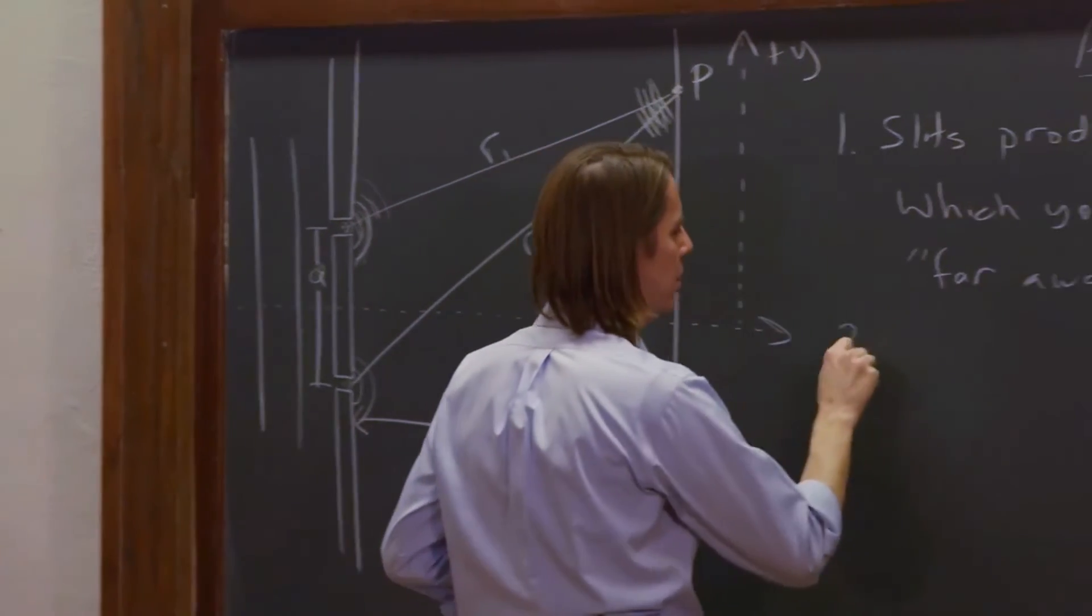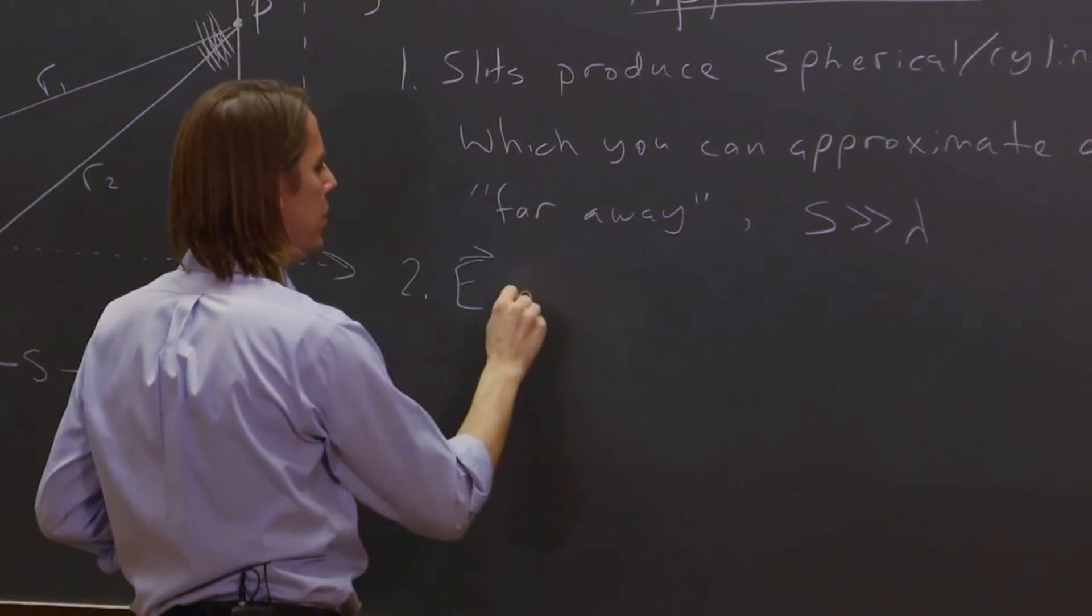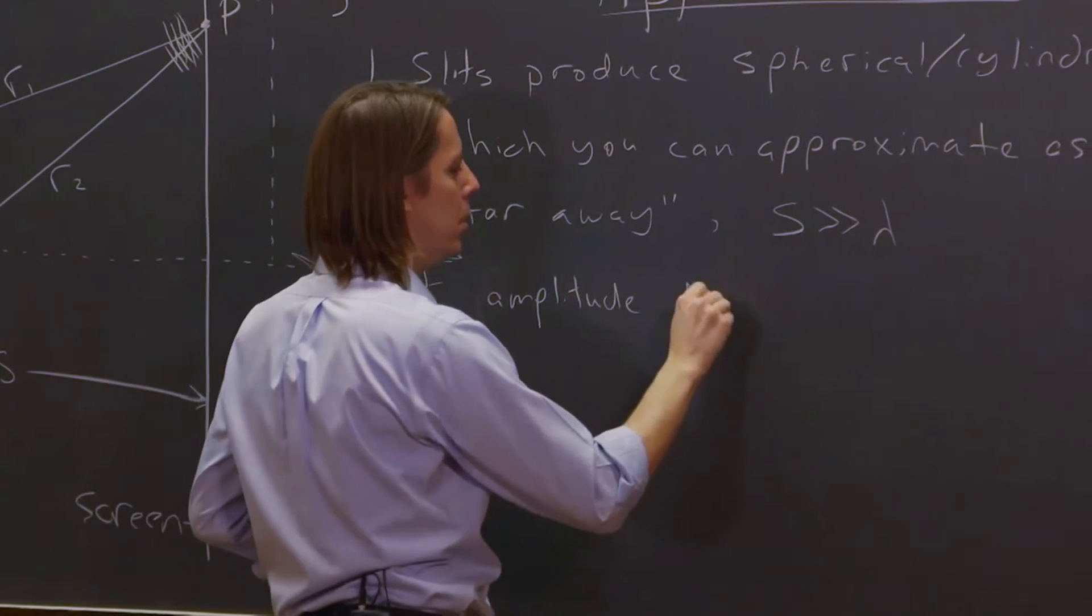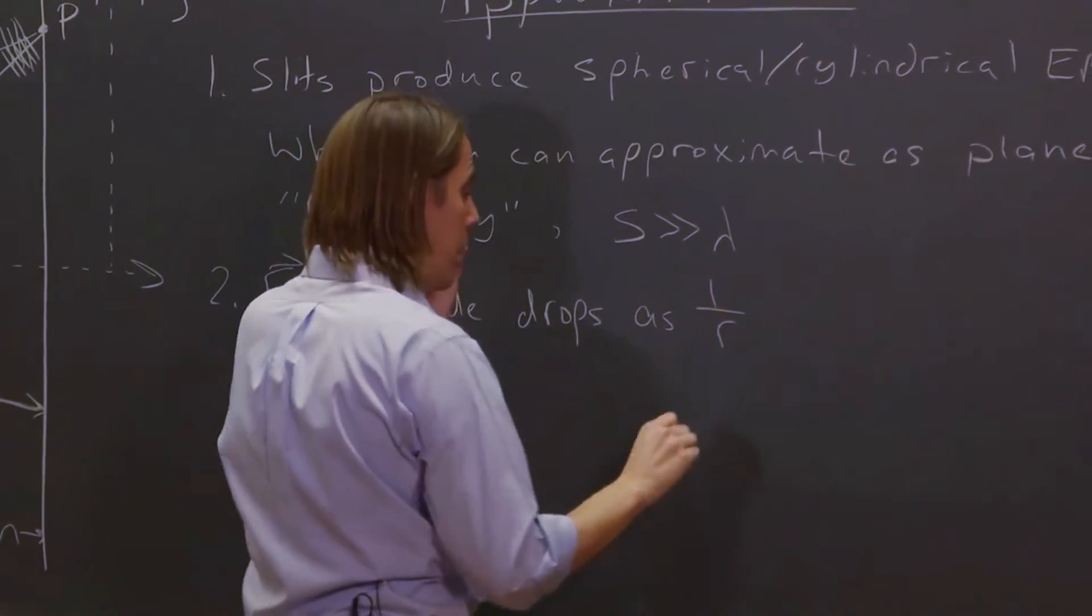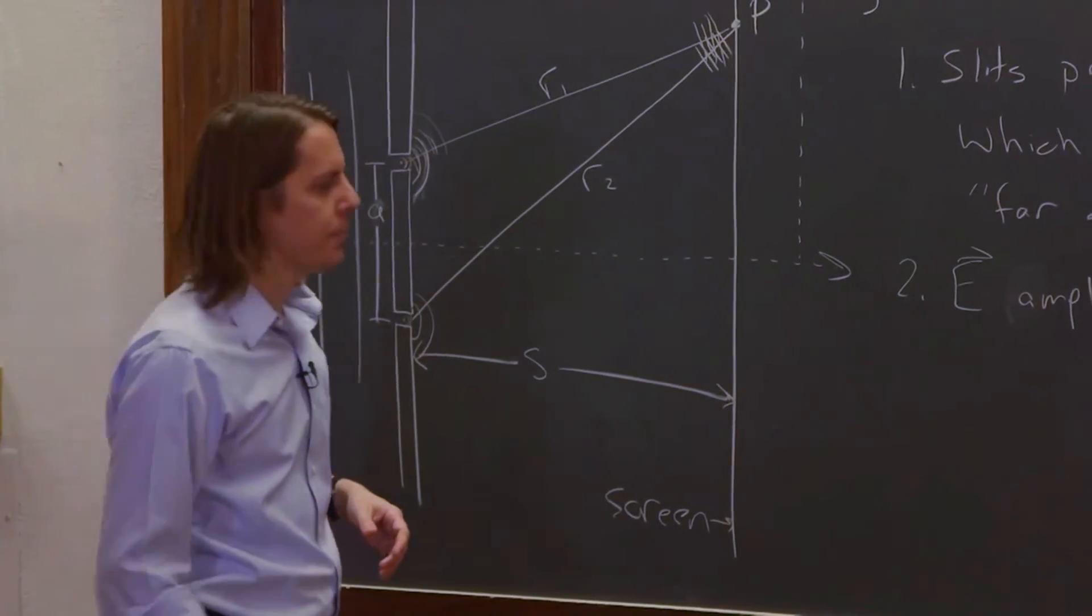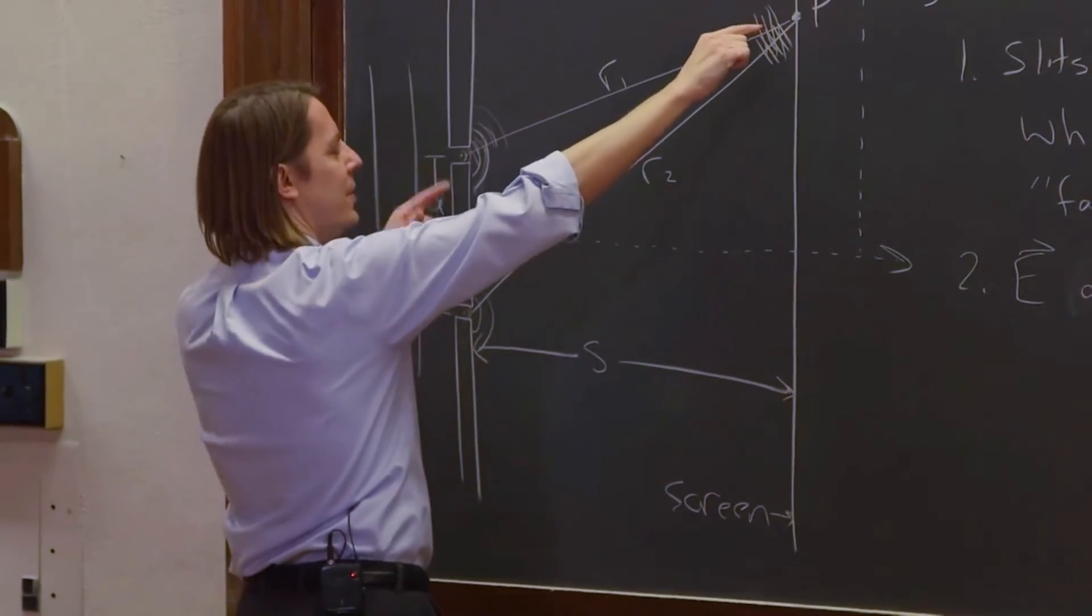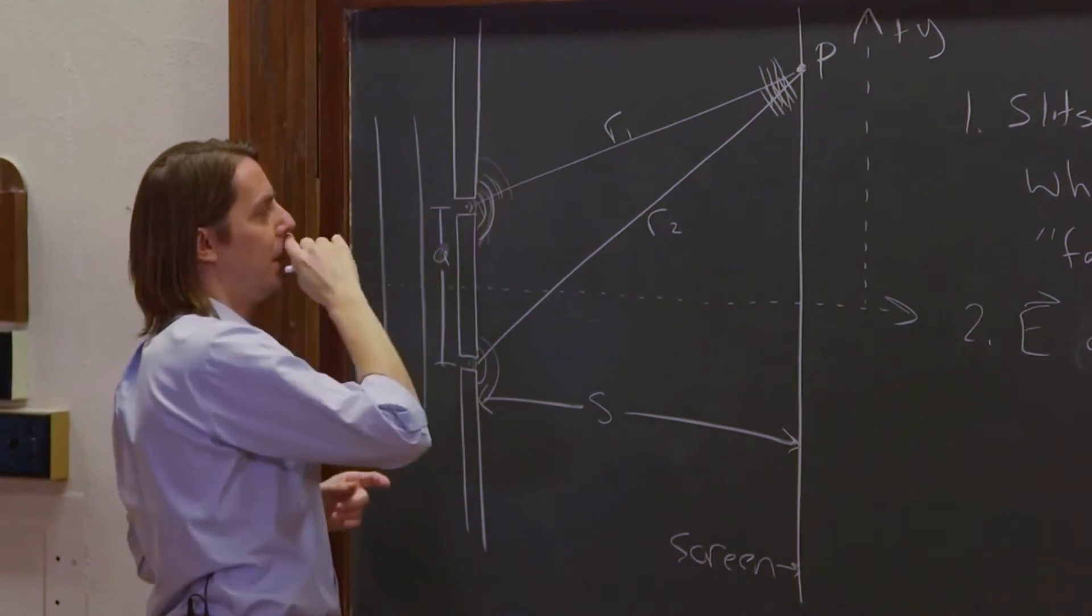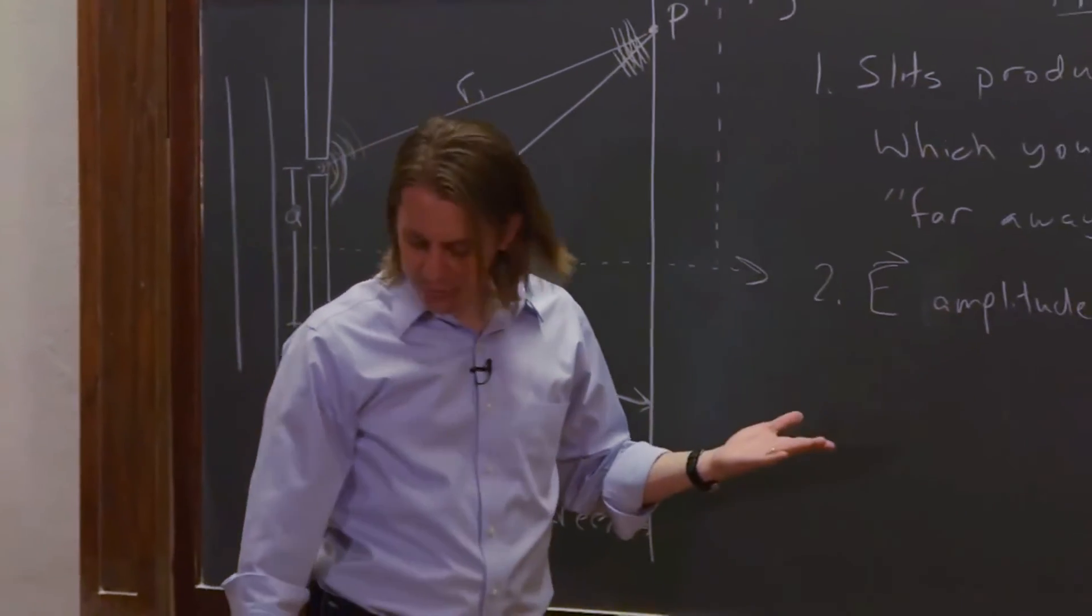Now if you do that, the E field amplitude drops as 1 over R. If it's a spherical wave, it goes as 1 over R. So this is a problem because you see this one is going to create as a different distance, R1 and R2 a little bit different. This one's a little bit further than this one for P right there. So that would give them different amplitudes since it drops as 1 over R.